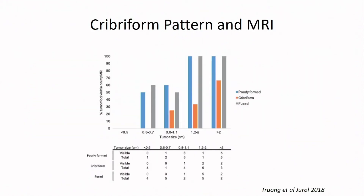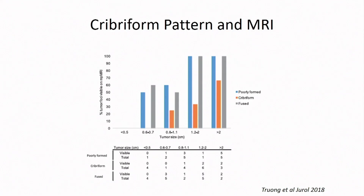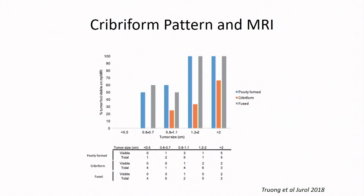There are clearly histologic variants of prostate cancer that are not visible with current MRI. A paper from the Rochester group showed that cribriform prostate cancers are very poorly detected with MRI. But as the Toronto group has shown, cribriform cancers are actually quite aggressive biologically. This is a class that, regardless of tumor size, is often missed by MRI, and it's important to be aware of it as a limitation.